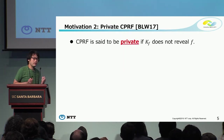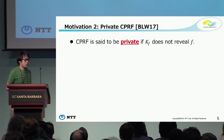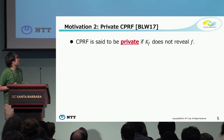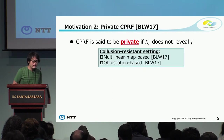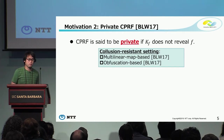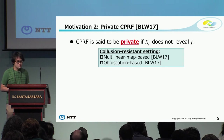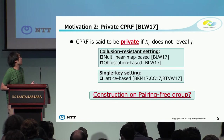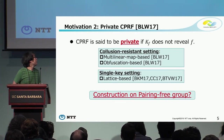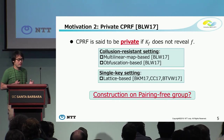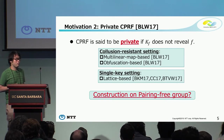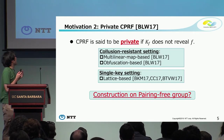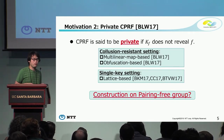As a second motivation, we consider private CPRF, introduced by Boneh et al. in 2017. A CPRF is said to be private if the constrained key K_F does not reveal F. In the collusion-resistant setting, there are constructions based on multi-linear maps or obfuscation. In the single-key setting, there are lattice-based constructions. However, we do not know how to construct private CPRF based on pairing-free groups, even for very simple functionalities like puncturing or bit-fixing. So we want to construct a private CPRF on pairing-free groups for any functionality.